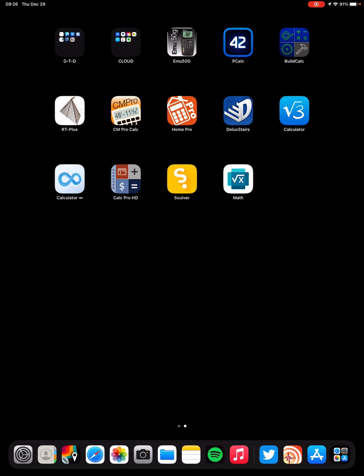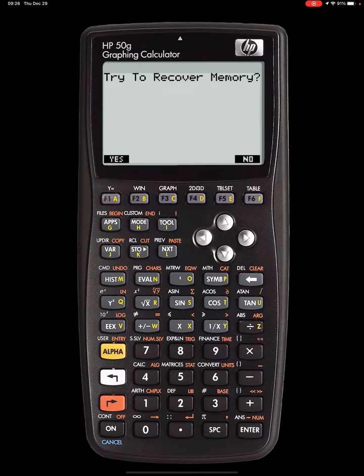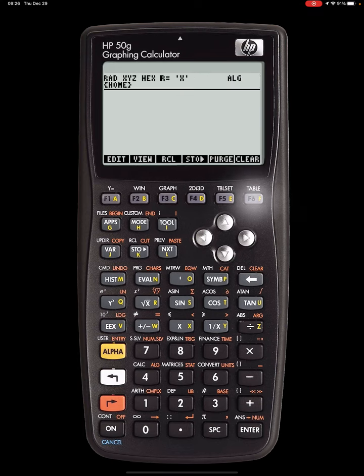Okay, so I'm going to start with this EMU50G. Hello, welcome. Memory clear? Sure. All right, so I'm on an iPad and I am recording. I'm going to see if this thing will actually allow me to create an actionable program. It's exactly what it looks like on my real HP50G. So the first thing I need to do is I see it say ALG up there, and I need to go to mode.